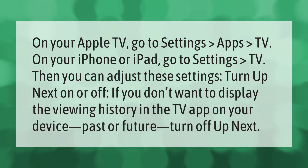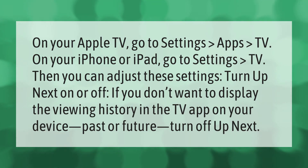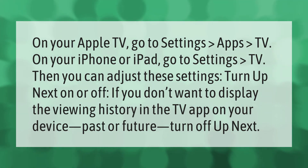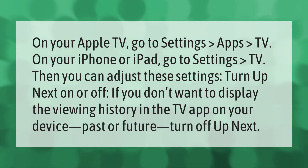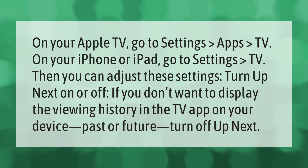On your Apple TV, go to Settings > Apps > TV. On your iPhone or iPad, go to Settings > TV. Then you can adjust these settings: turn Up Next on or off. If you don't want to display the viewing history in the TV app on your device — past or future — turn off Up Next.